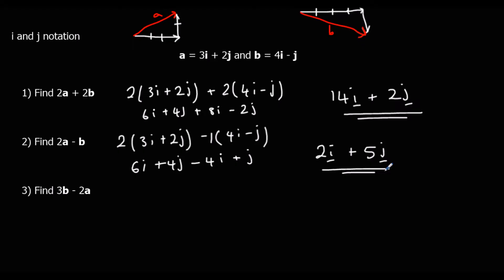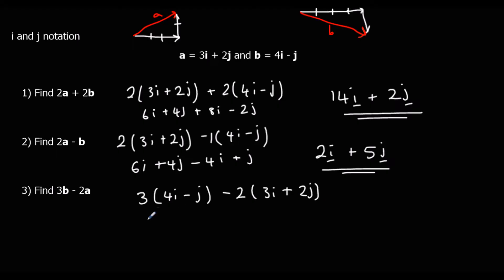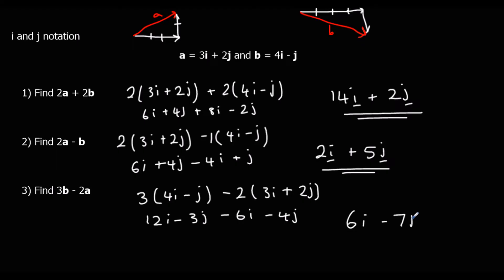3b minus 2a — so that's 3 lots of b minus 2 lots of a. That's 12i minus 3j, minus 6i minus 4j, which is 6i minus 7j.